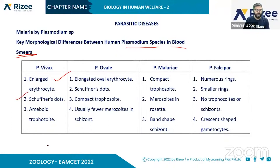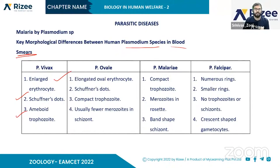Amoeboid trophozoites are observed in Plasmodium ovale. In Plasmodium ovale, elongated oval erythrocytes are presented.